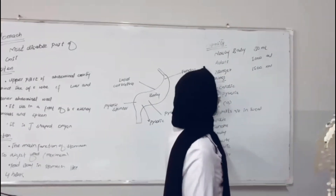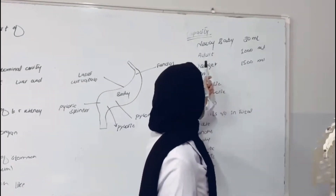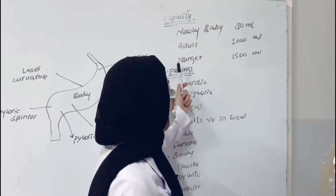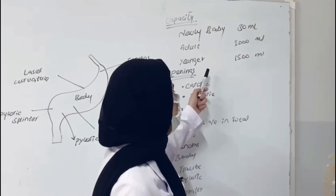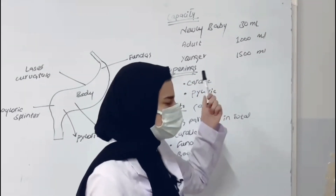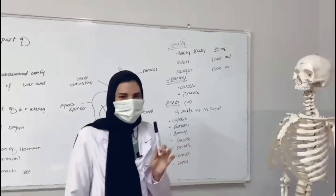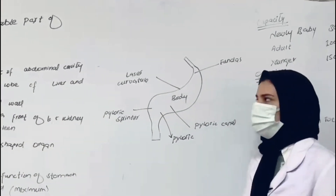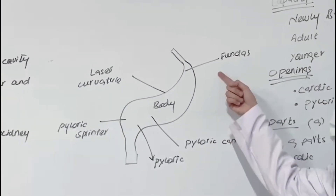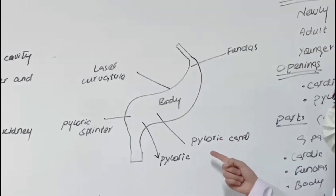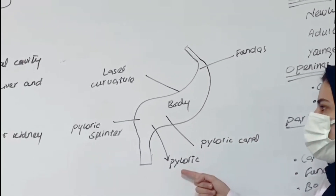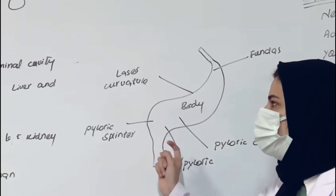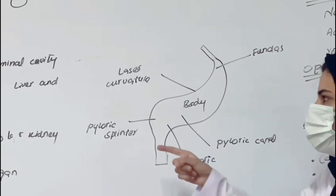I will now explain the parts of the stomach. The parts include the fundus, pyloric canal, pyloric body, and pyloric sphincter.